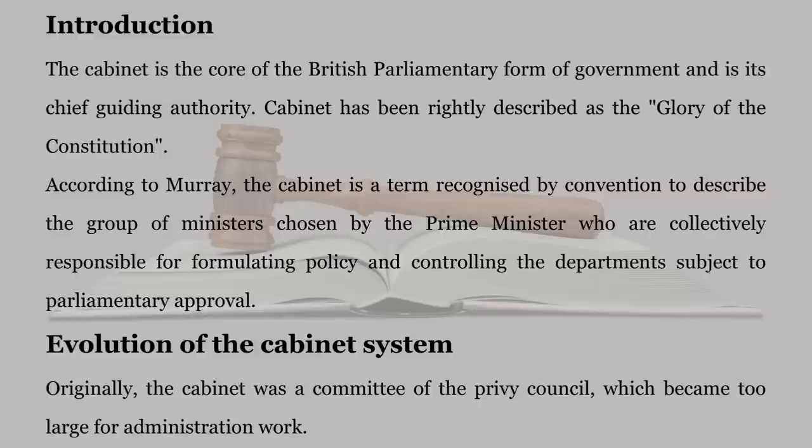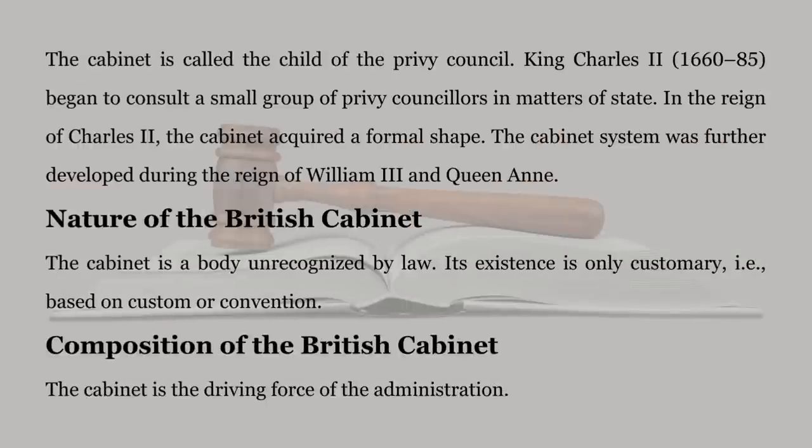Evolution of the Cabinet System. Originally, the Cabinet was a committee of the Privy Council, which became too large for administration work. The Cabinet is called the child of the Privy Council. King Charles II (1668–85) began to consult a small group of Privy Councilors in matters of state. In the reign of Charles II, the Cabinet acquired a formal shape. The Cabinet System was further developed during the reign of William III and Queen Anne.